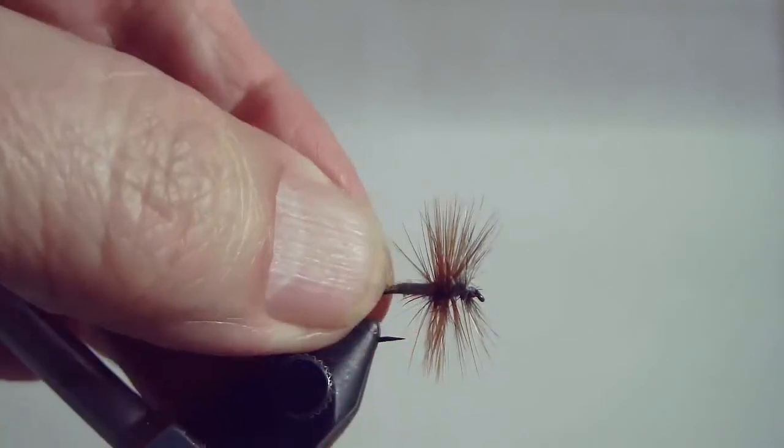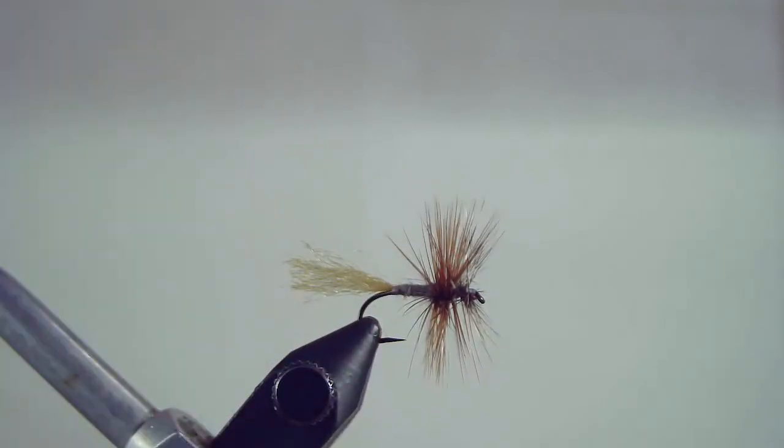A very simple pattern to tie. It is the basic Adams grizzly brown hackle dubbed body and instead of golden pheasant tippet we used just a small amount of gold colored zelon.